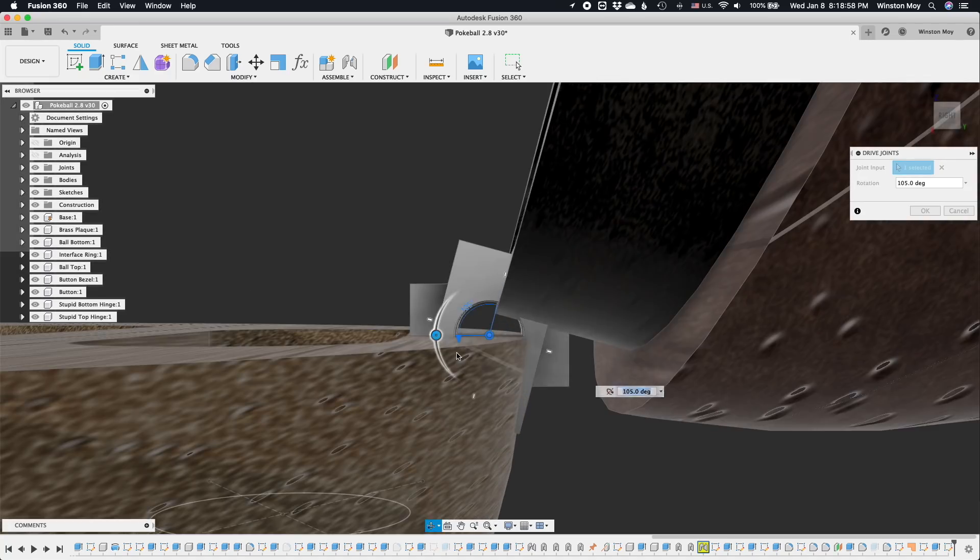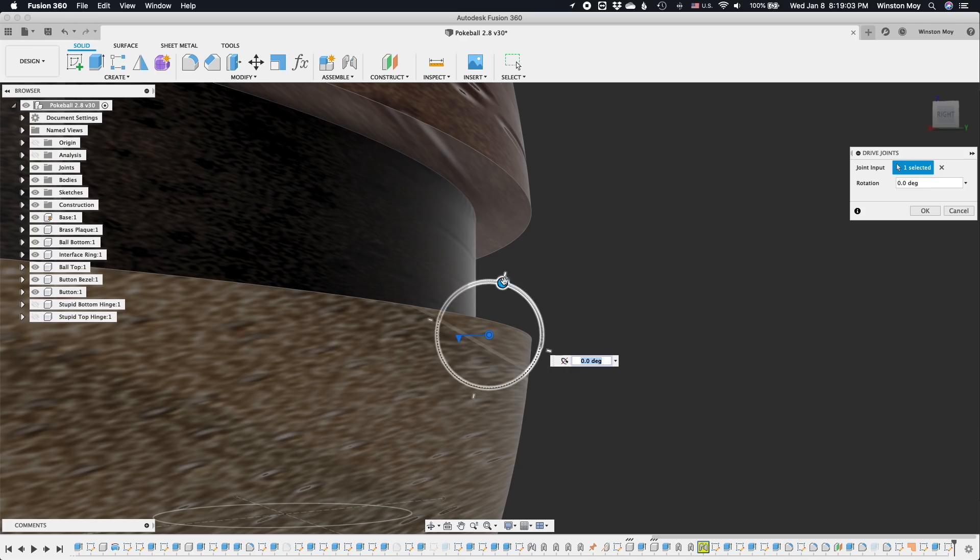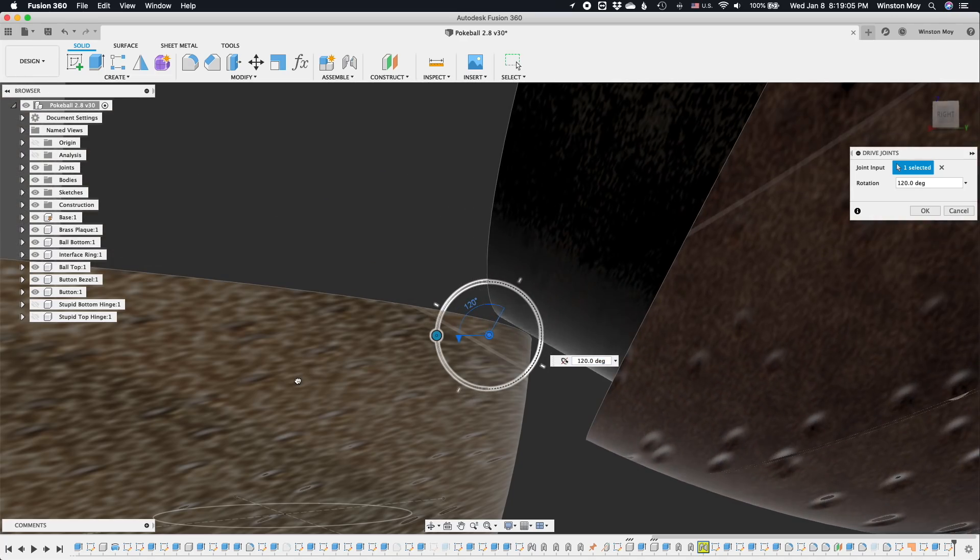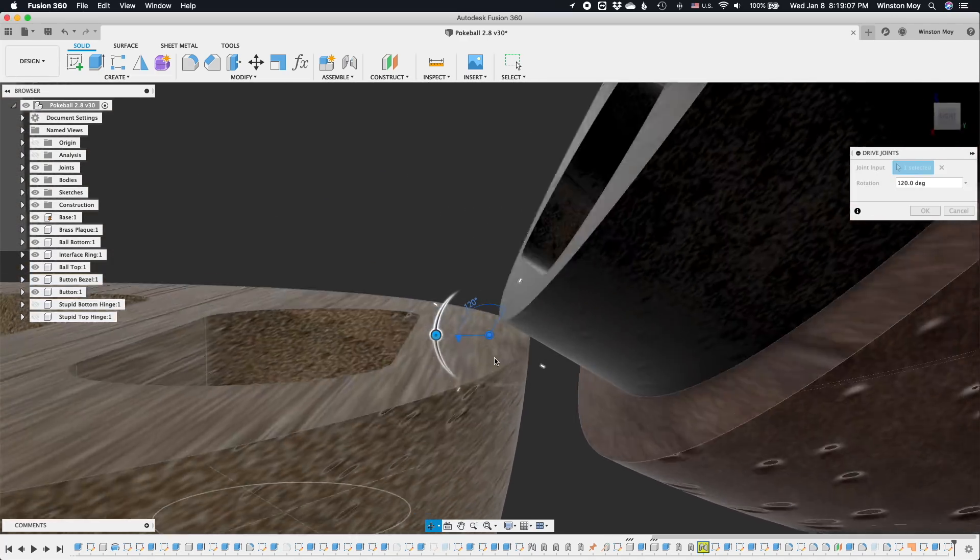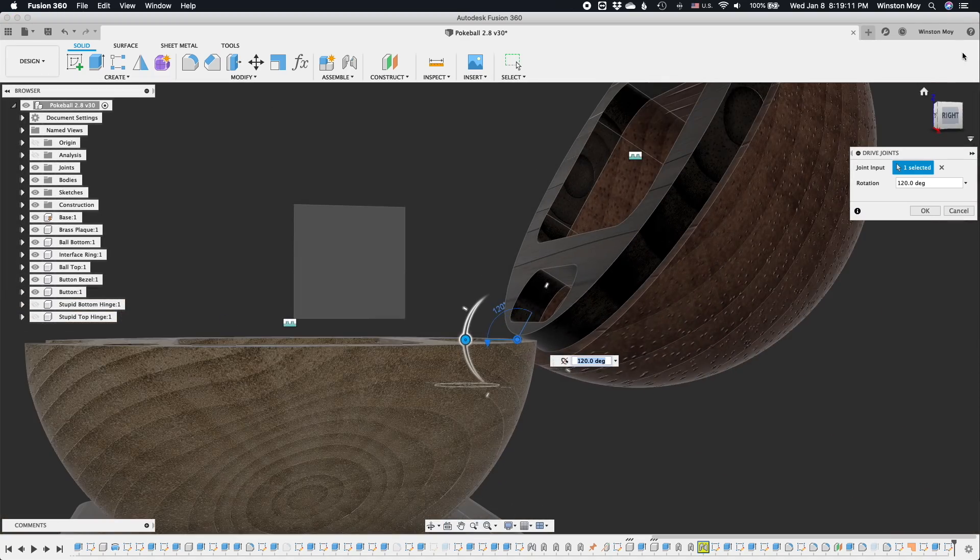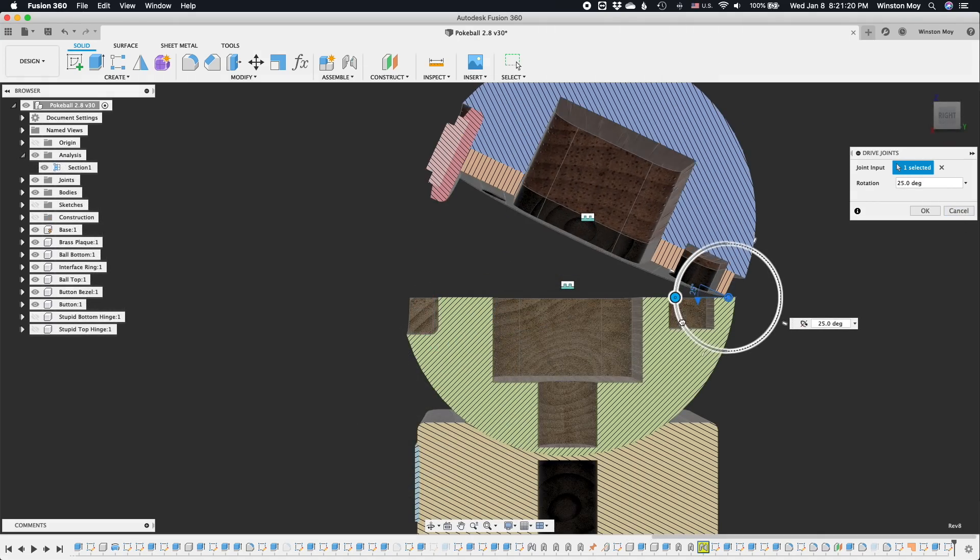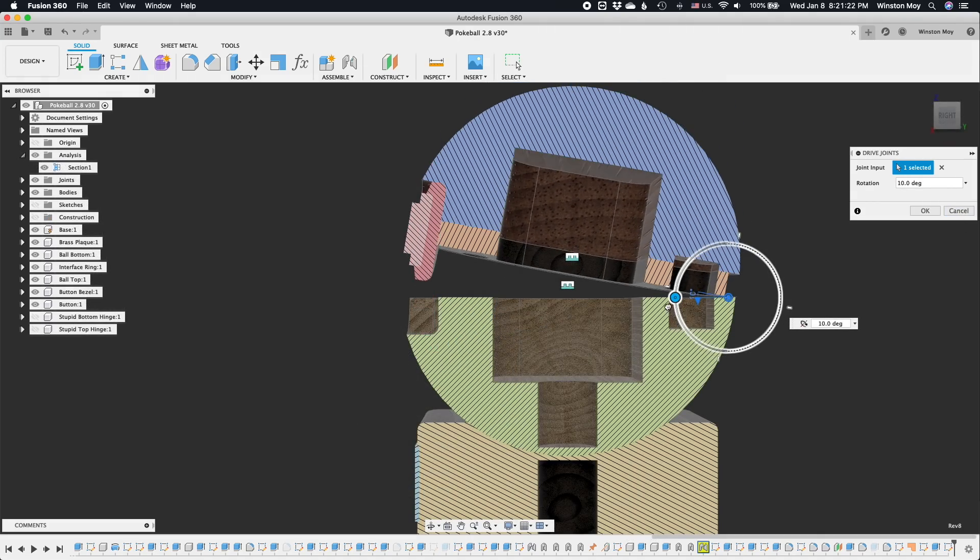To verify that everything would work and that I wouldn't have any clearance issues, I sucked up my pride and finally learned how to use Fusion's weird joint system. I locked the individual components of my pokeball model together, grounded the pedestal, and created two invisible joint components about which to rotate the two halves. Using this method, I was able to ensure that I'd be able to open the pokeball at least 90 degrees.